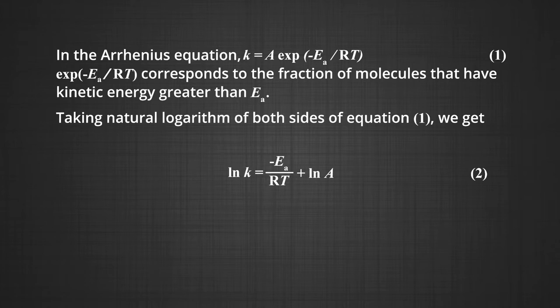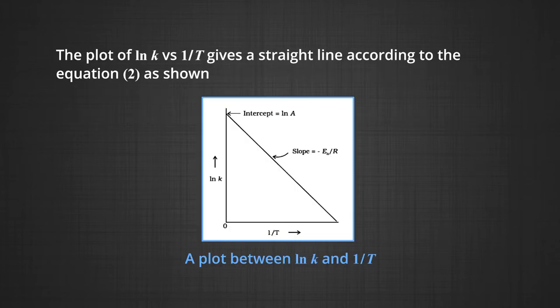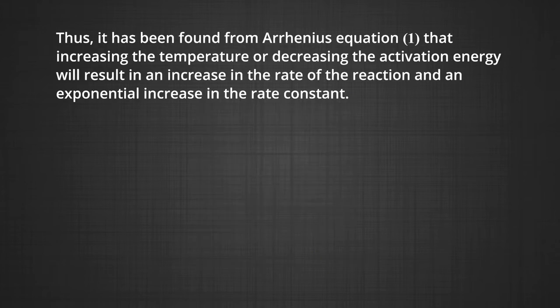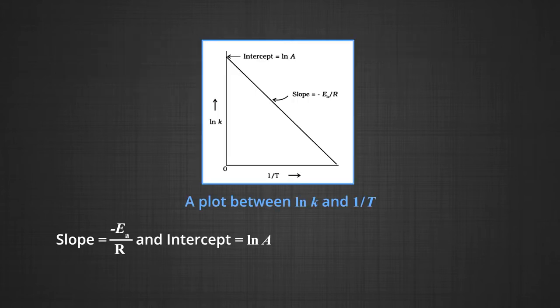In the Arrhenius equation, the factor e^(−Eₐ/RT) corresponds to the fraction of molecules that have kinetic energy greater than activation energy. Taking natural logarithm of both sides: ln K = −Eₐ/RT + ln A. The plot of ln K versus 1/T gives a straight line with slope = −Eₐ/R and intercept = ln A. Thus, increasing temperature or decreasing activation energy results in an increase in the rate of reaction and an exponential increase in the rate constant. We can calculate Eₐ and A using these values.